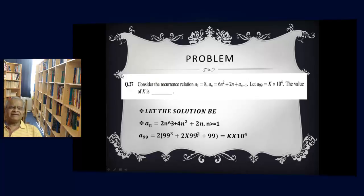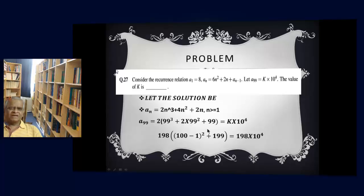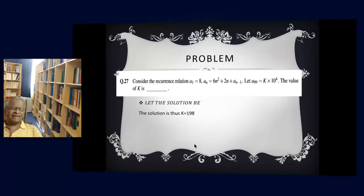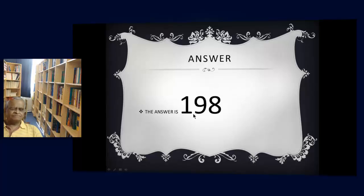The polynomial an is given by 2n³ plus 4n² plus 2n. What is the value of a99? Substitute n equals 99: 2(99³) plus 4(99²) plus 2(99). We can remove the 2 outside and get 99³ plus 2(99²) plus 99. Now 99 is common, so I take out 99 and get 99(99² plus 2(99) plus 1). This interestingly enough becomes 10 to the power of 4. So factor k therefore turns out to be 198. The answer is 198.